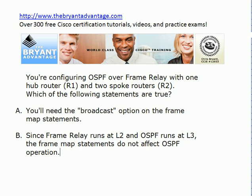Let's take a look at this question — it's a very different exam: one single question but a lot of good information. You're configuring OSPF over frame relay with a typical hub-and-spoke router configuration where R1 is the hub router and R2 and R3 are the two spoke routers. I've got six statements to show you. First: will you need the broadcast option on the frame map statements for OSPF to work correctly? Second: since frame relay runs at L2 and OSPF runs at L3 of the OSI model, do the frame map statements even matter?